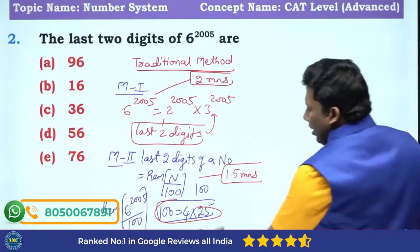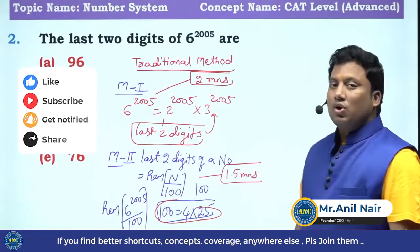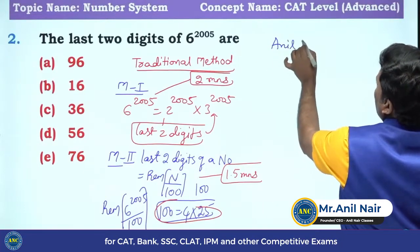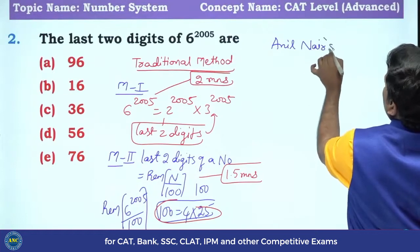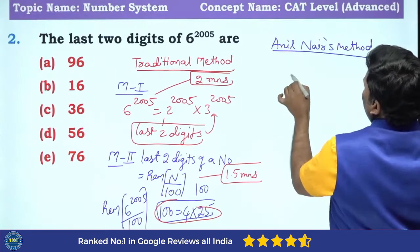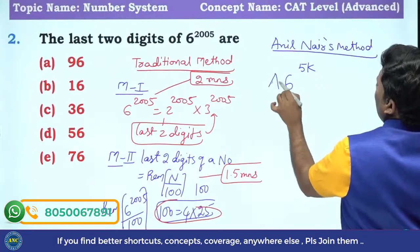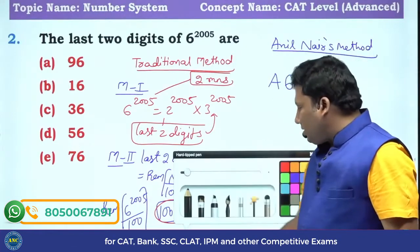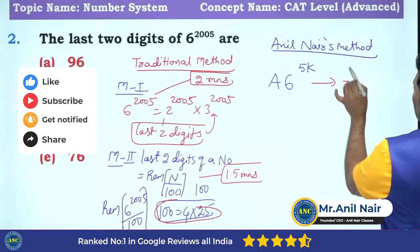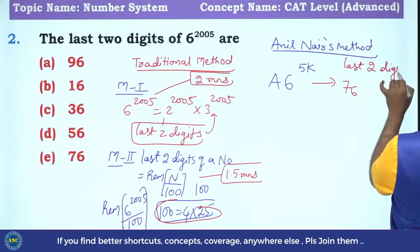Now see here. We are getting into level 3, advanced level. That is the reason it is question number 2. Now Anil Nair's way of solving. Very easy way to solve. Within 5 seconds you will get the answer. Anil Nair's method. Simple. If a number unit digit is 6, if the power is a multiple of 5, 10th place could be any number, last two digits is 76.